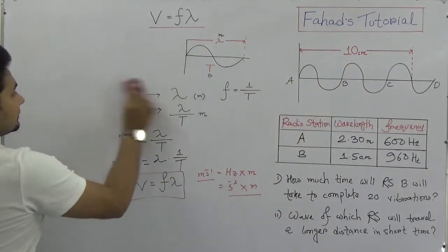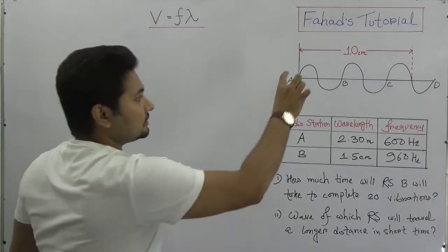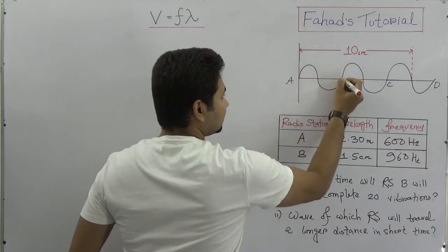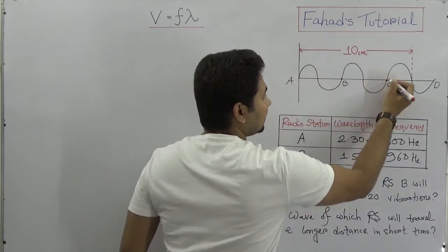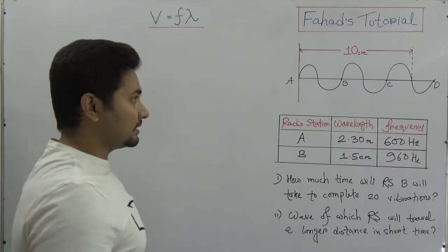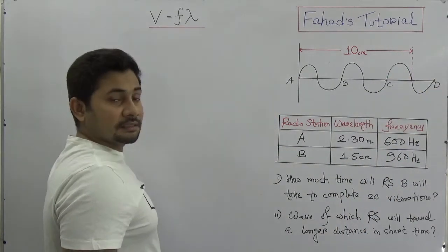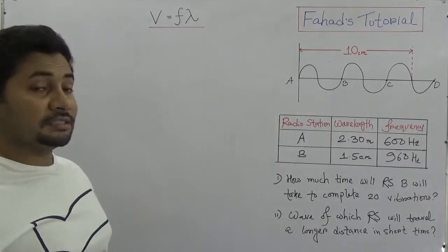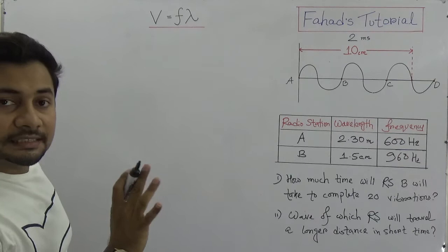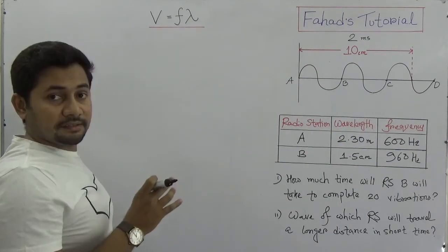Suppose in your question paper a wave diagram is drawn and some questions are asked. In this wave, from A to B is one complete vibration, from B to C is another complete vibration, and from C to D is another. The distance given spans from a midpoint, making it 2.5 complete vibrations covering 10 centimeters, and the wave completes this in 2 milliseconds.